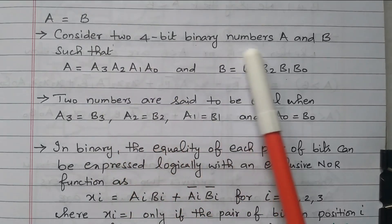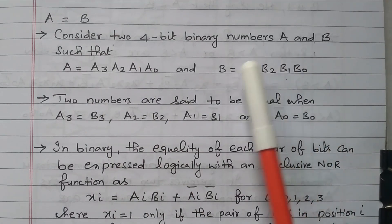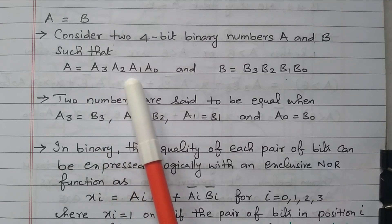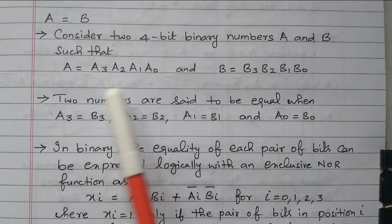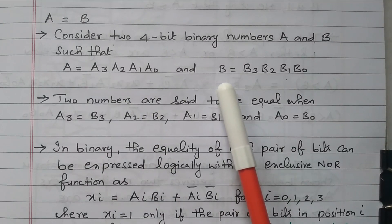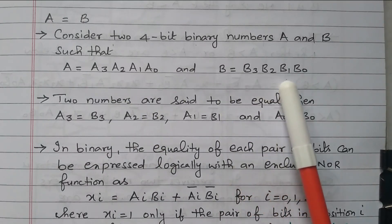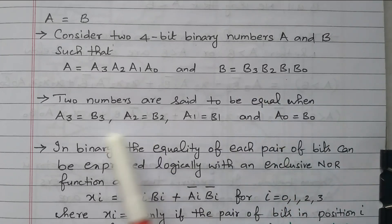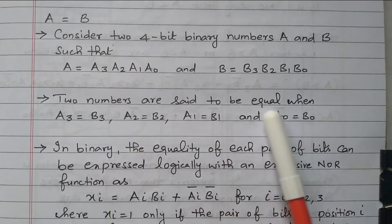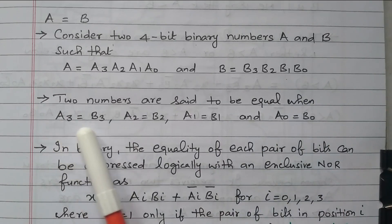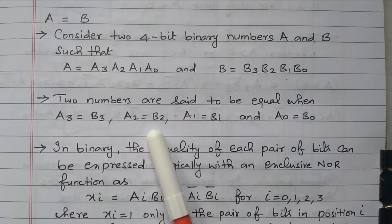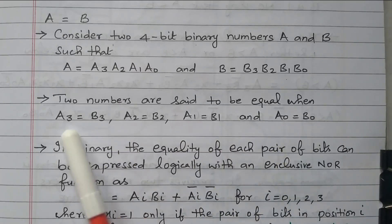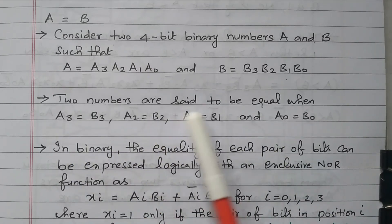Consider the 4-bit binary numbers A and B. A has four digits: A3, A2, A1, A0. A0 is the LSB and A3 is the MSB. Similarly, B has B3, B2, B1, B0, where B0 is the LSB and B3 is the MSB. The two numbers are said to be equal when A3 equals B3, A2 equals B2, A1 equals B1, and A0 equals B0. Only in such a case are the two numbers equal.